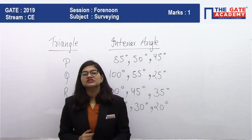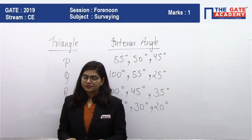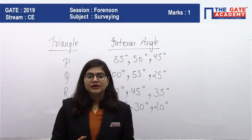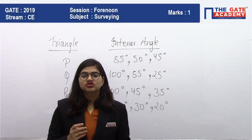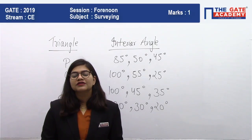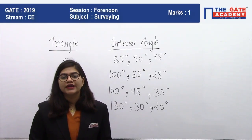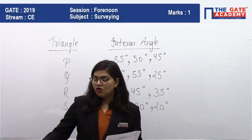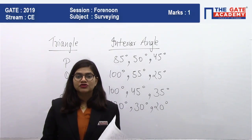As we know, in triangulation survey all angles in a triangle should be between 30° to 120°. So all the angles must be within this range.